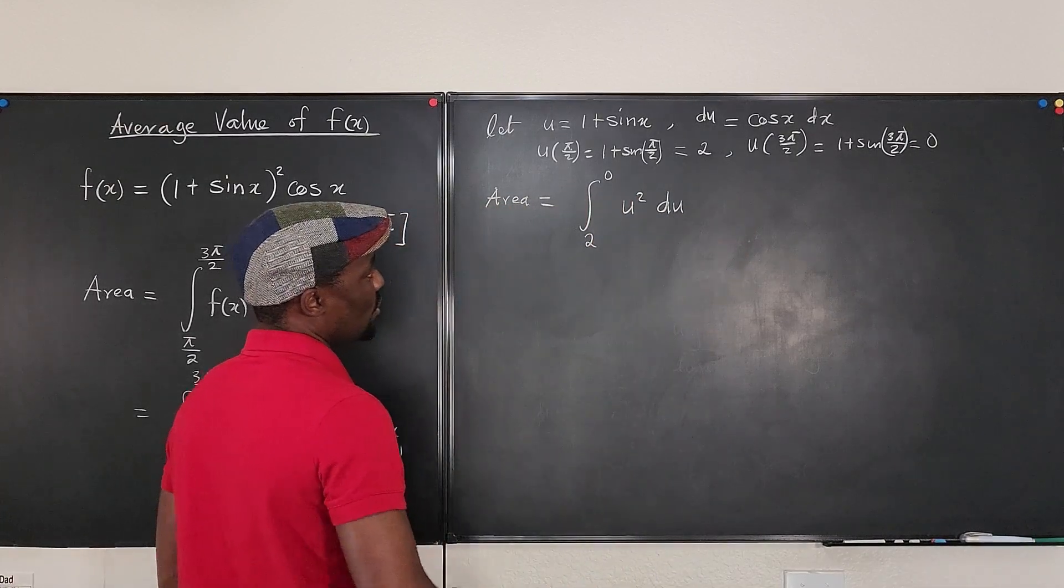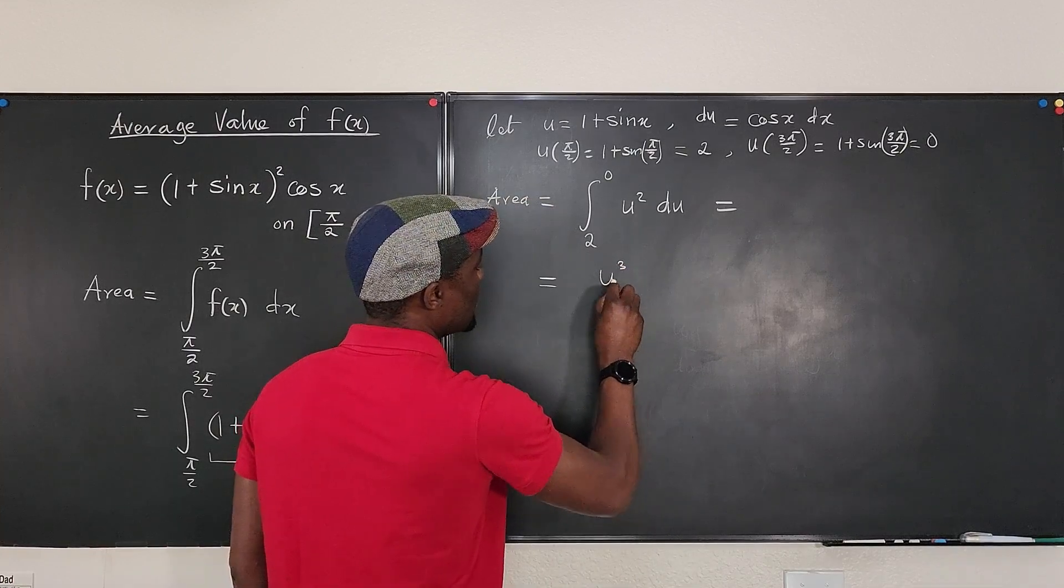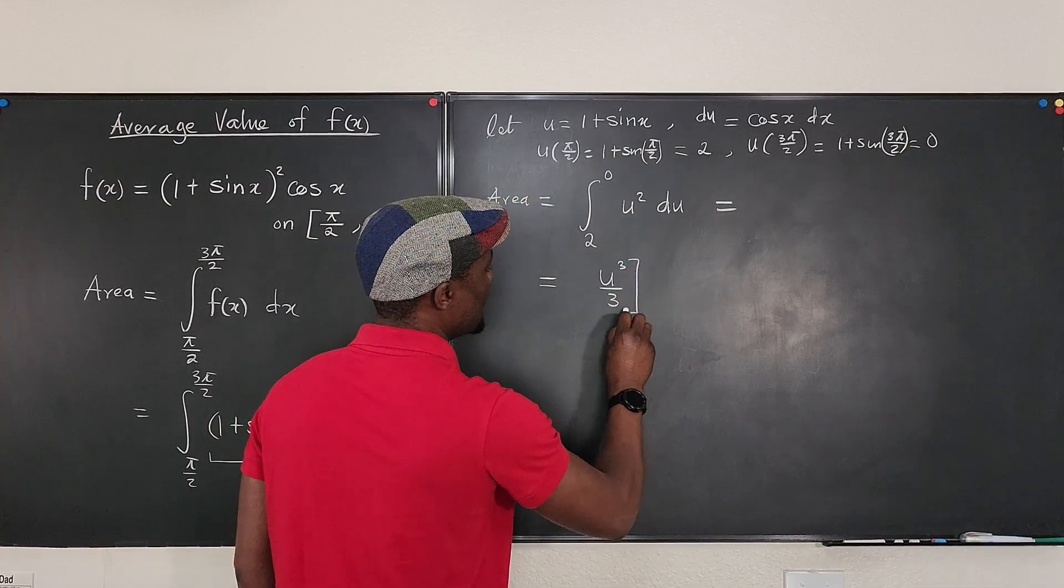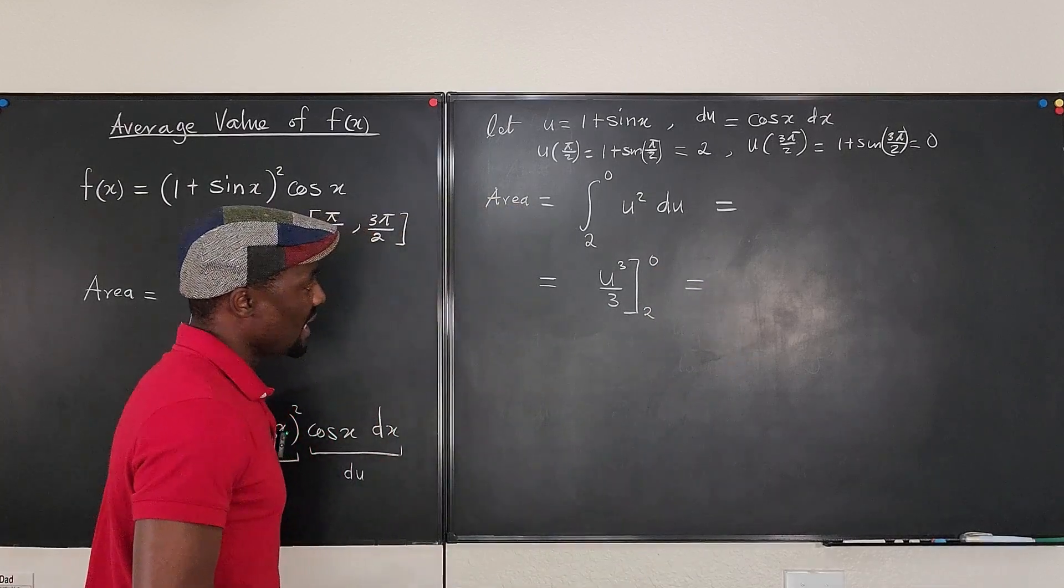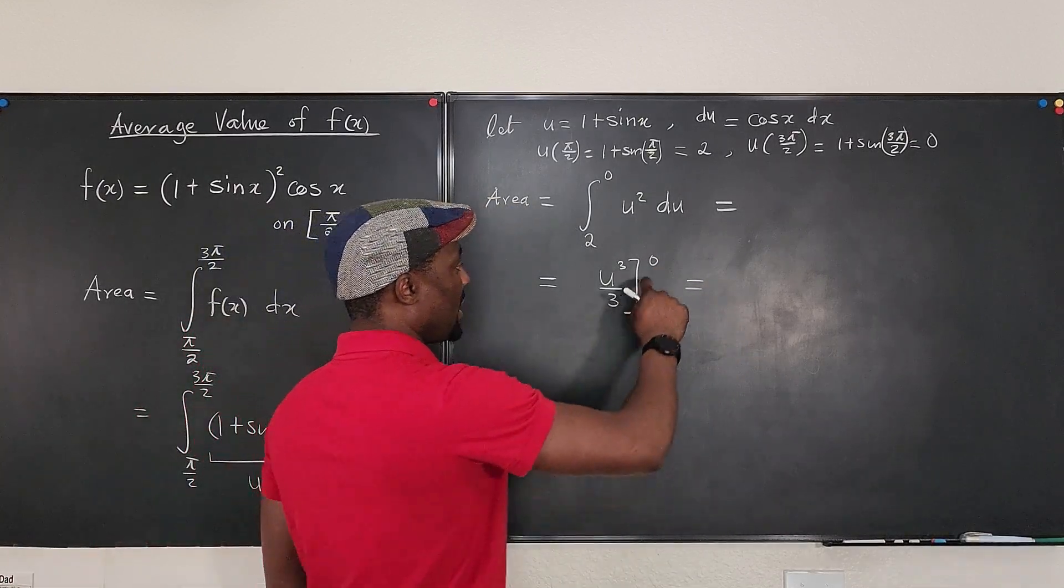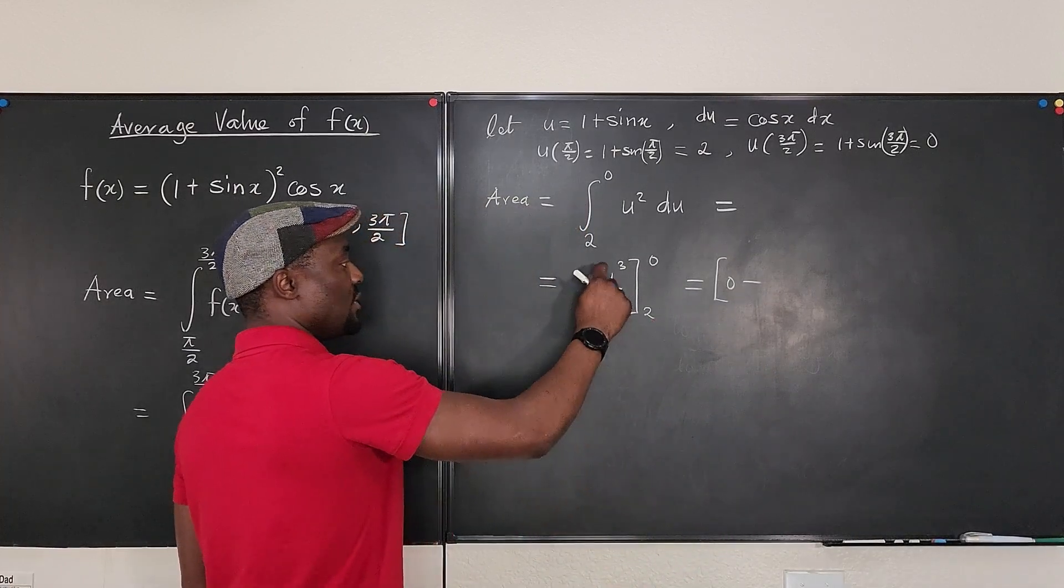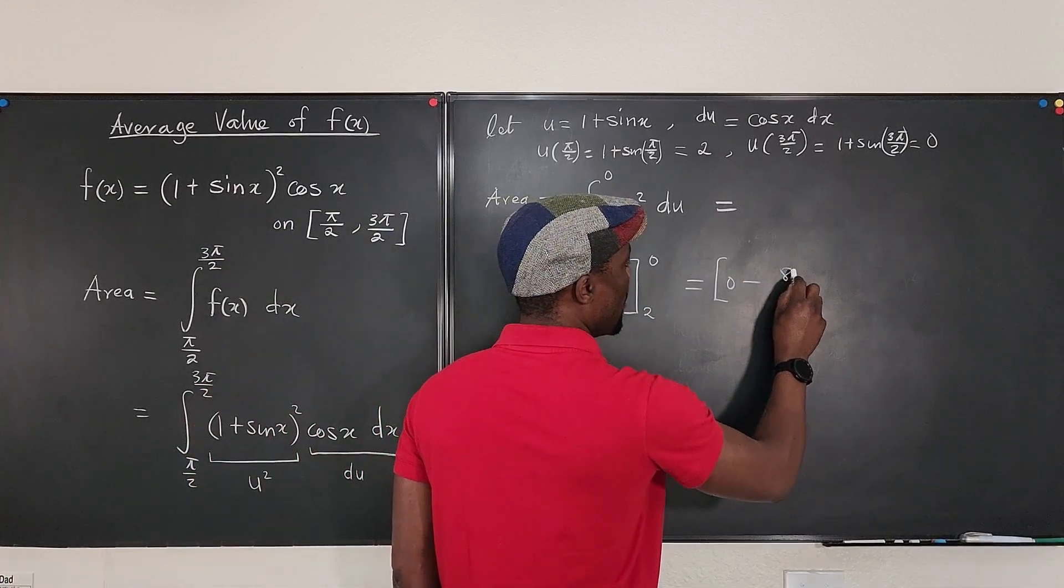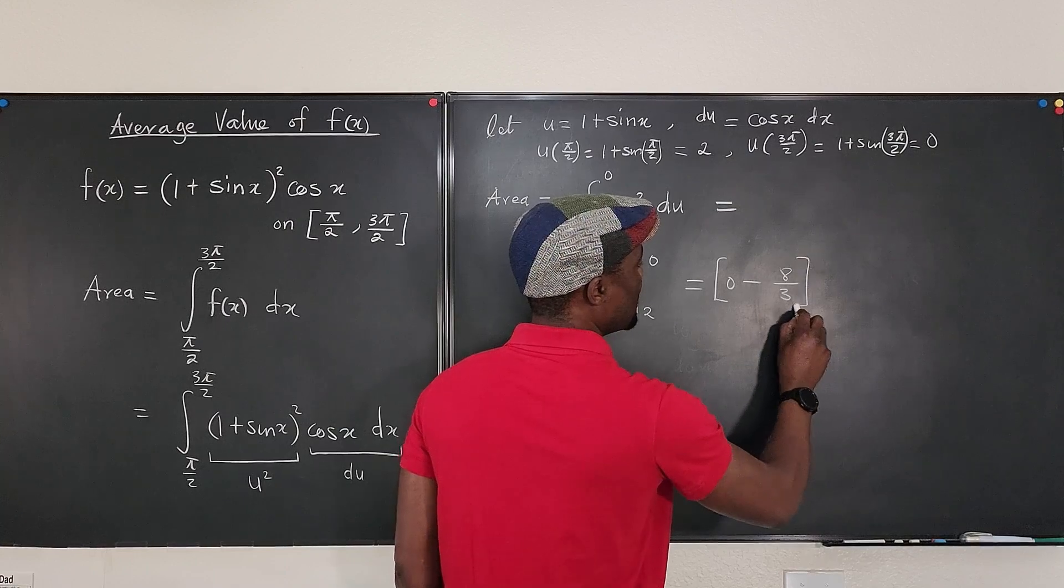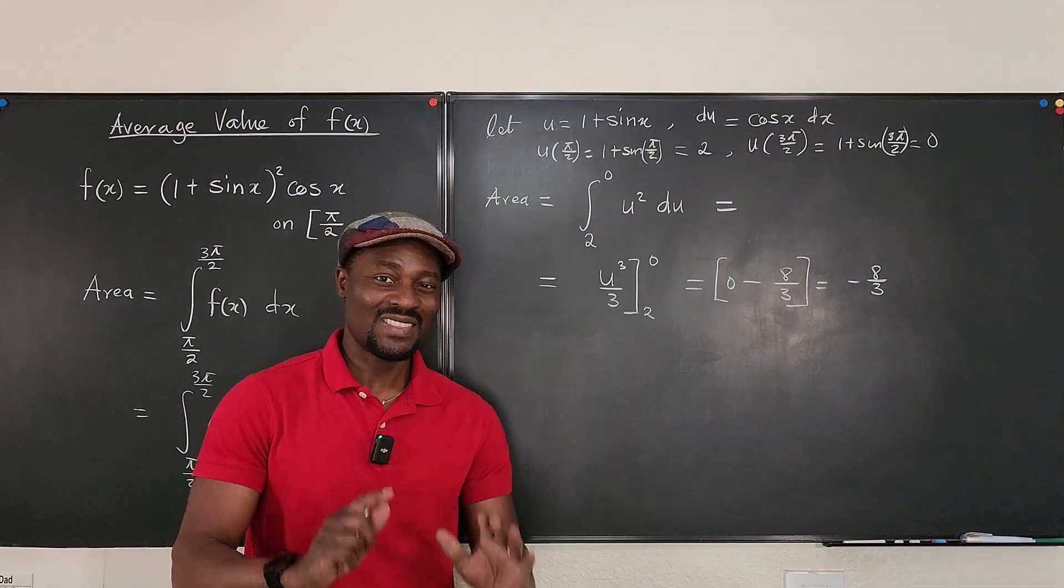Now, if I integrate this with respect to u, what do I get? This is equal to u cubed divided by 3 evaluated from 2 to 0. And what does that give me? If I plug in 0 here, it's going to be 0 minus, if I plug in 2 here, it's going to be 2 cubed over 3. That's 8 over 3. And that gives me negative 8 over 3. That's the area.